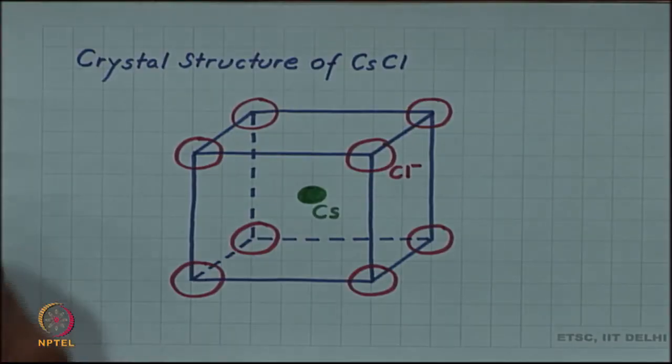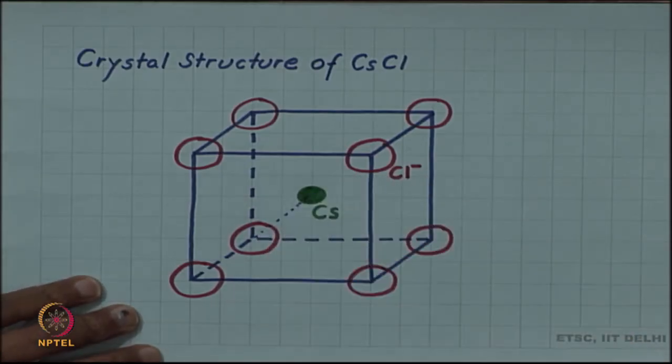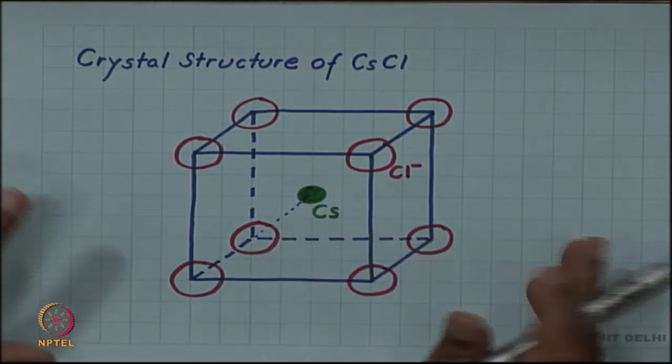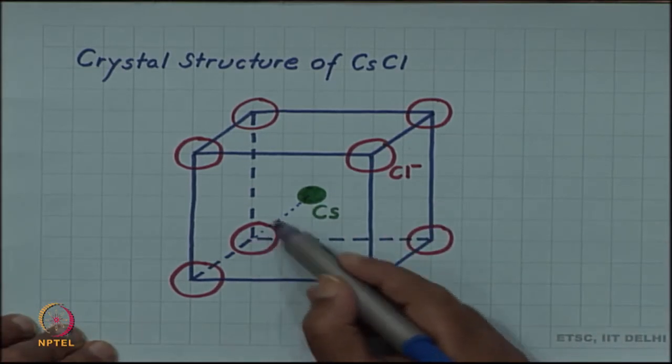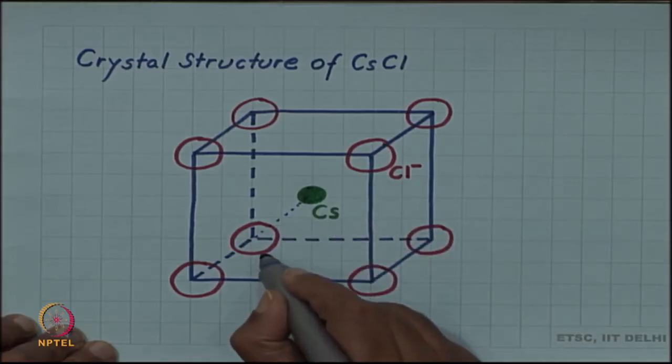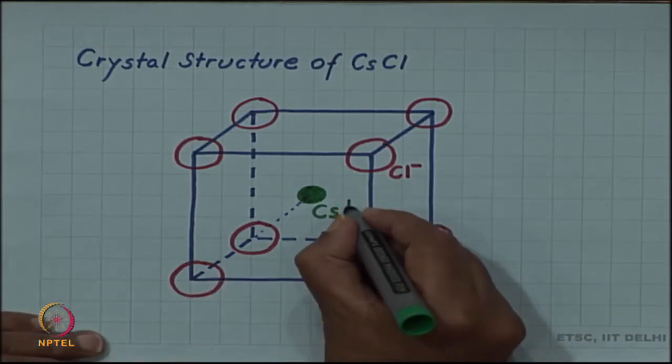The nearest neighbor distance is along the body diagonal and these two will be touching. This is a spaced out view where the ions are shown separated, but actually the chloride and caesium ions will be in contact.